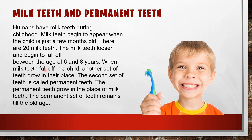When milk teeth fall off, another set of teeth grow in their place. This second set of teeth is called permanent teeth. The permanent teeth grow in the place of milk teeth and remain till old age. So humans have two sets of teeth: milk teeth in childhood, and permanent teeth which replace them and last till old age.